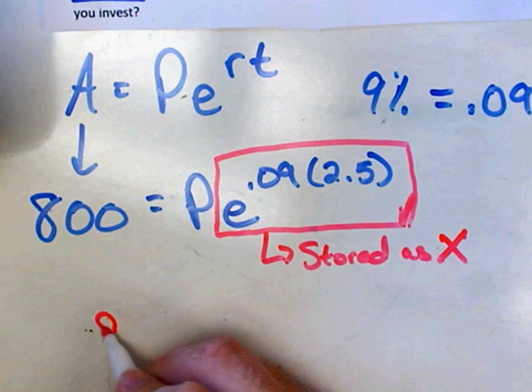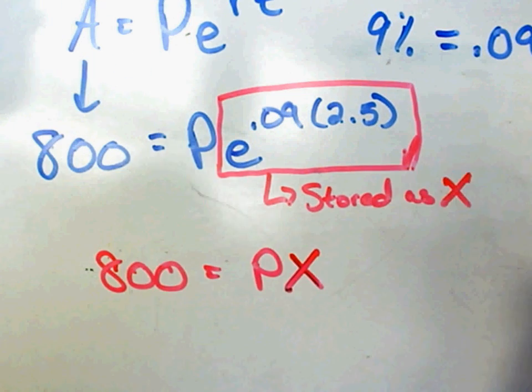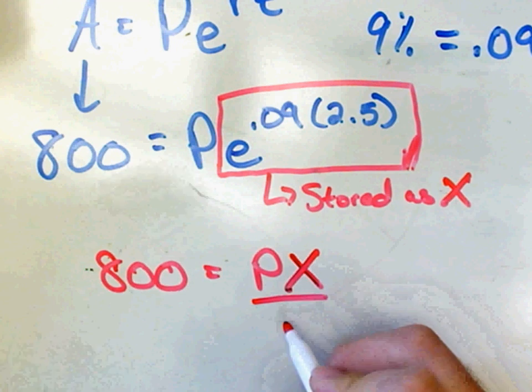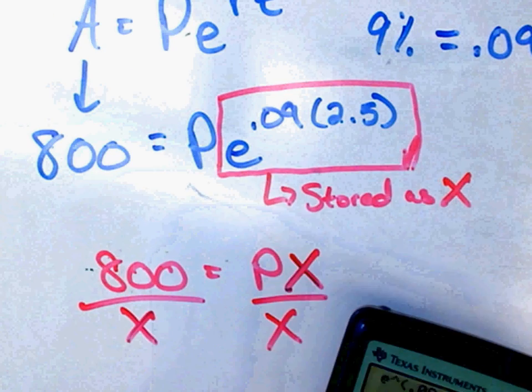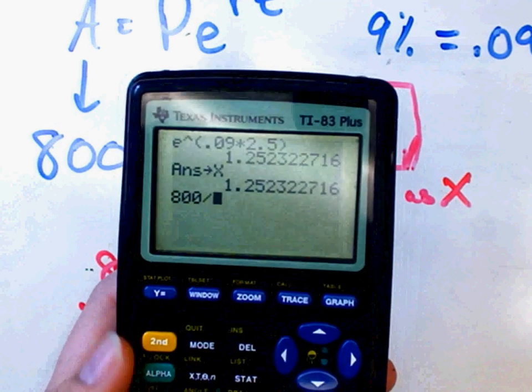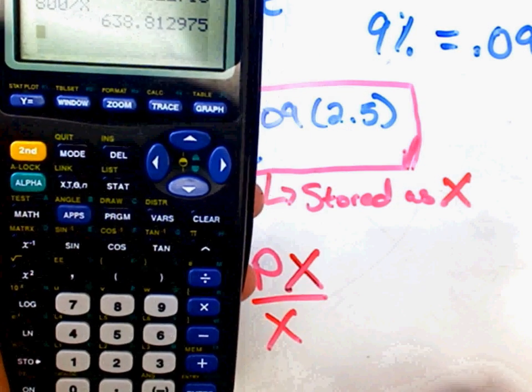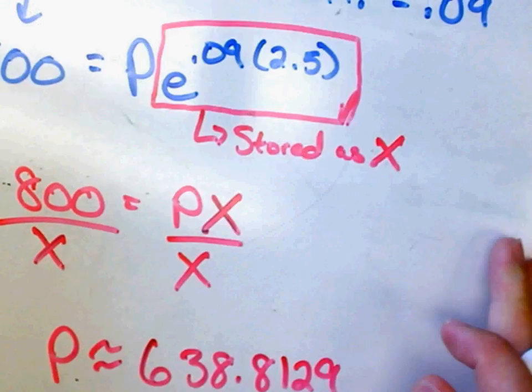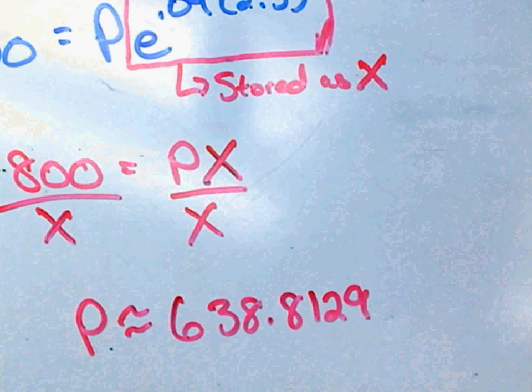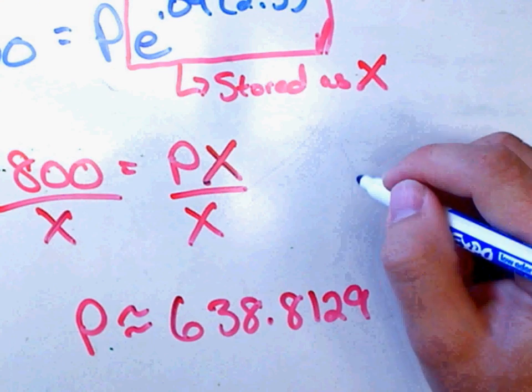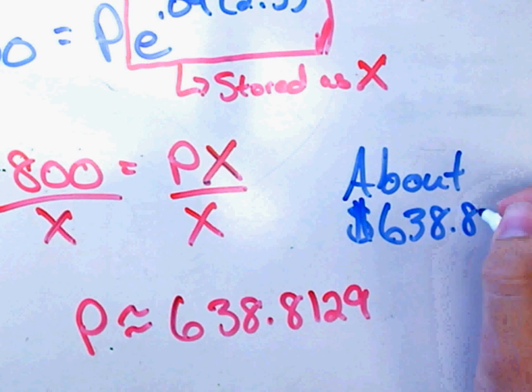So now I have 800 equals PX. And of course, now it should look a little more obvious. I'm going to divide both sides by X. And I'll get P is approximately, if I do 800 divided by X, 638.812975. But remember, we are solving for principle, which is money. So we would say our final answer is about $638.81. Because we do need to round appropriately.